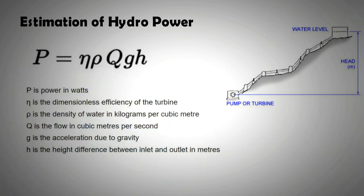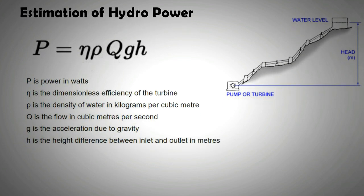Nu is the dimensionless efficiency of the turbine. For Francis and Kaplan turbines it's nearly 92 percent. Rho is the density of water in kg per meter cube. Q is the flow rate in cubic meters per second. G is the acceleration due to gravity and h is the height difference between the inlet and the outlet in meters.